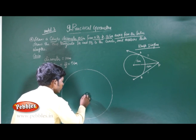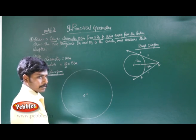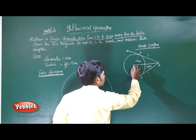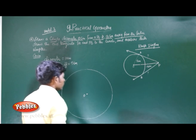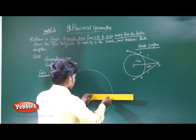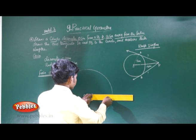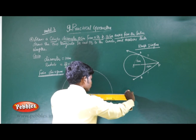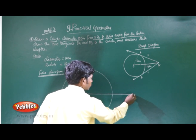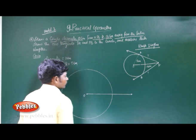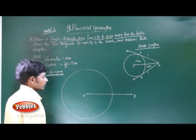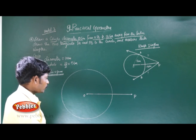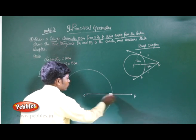This is the centre of the circle O. Take a point P such that the distance between the centre and the point is 13 centimetres. Take the line OP.